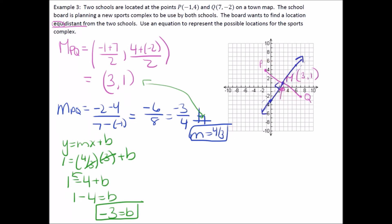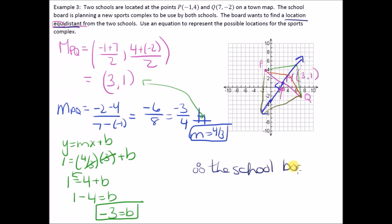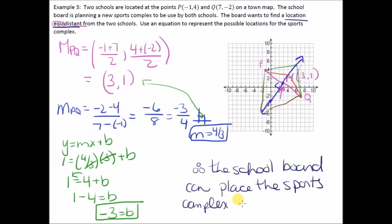Every single point on the right bisector is equidistant from P and Q. For example, if we place the sports complex at one point on the bisector, its distance to P equals its distance to Q. This holds for any point along the line. The sports complex doesn't have to lie on segment PQ itself. Therefore the school board can place the sports complex anywhere on the line y = (4/3)x − 3.